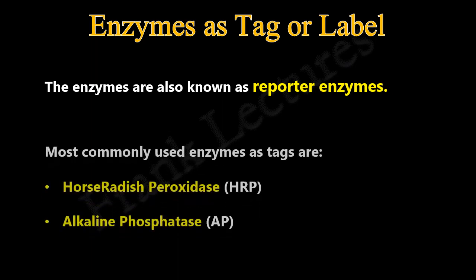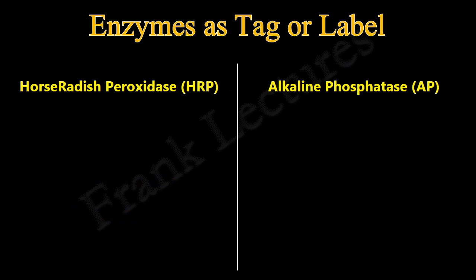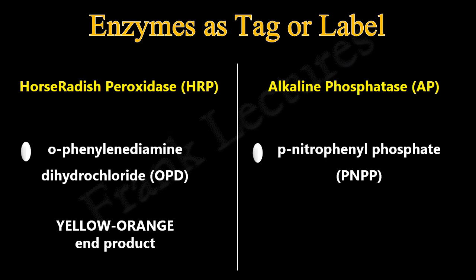The most commonly used enzyme labels are horseradish peroxidase and alkaline phosphatase. A large selection of substrates is available for performing ELISA with horseradish peroxidase and alkaline phosphatase. The most commonly used substrate for horseradish peroxidase is o-phenylenediamine dihydrochloride, which produces a yellow-orange end product. Similarly, for alkaline phosphatase, the substrate used is p-nitrophenyl phosphate, and a yellow end product is produced.